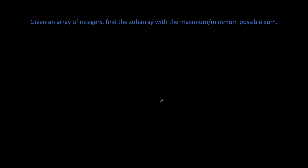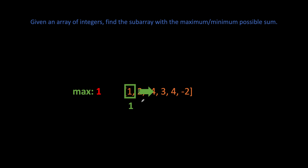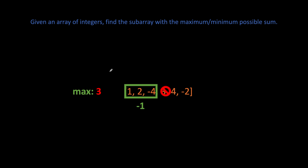Here's our example from the question. We start tracking maximum sum at index zero. The subarray sum is one, so our global maximum sum is one. Expanding the sum: the first two elements give three, so the maximum possible sum is now three. Continuing, the new sum is minus one, which is less than our global maximum of three. Since our sum fell below zero, that is not acceptable — so we reset our sum window starting with the next element.